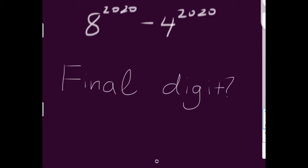Alright, here's the problem we're looking at today. We've got 8 to the power of 2020 minus 4 to the power of 2020. And the question is, what's the final digit of that number in scientific form or standard notation? And by final digit, I mean the unit's digit of that number.